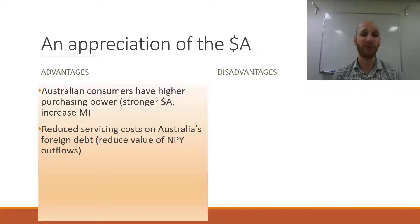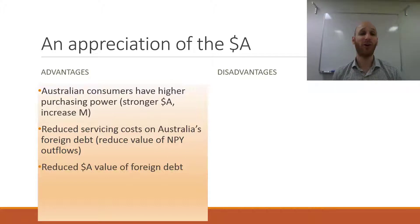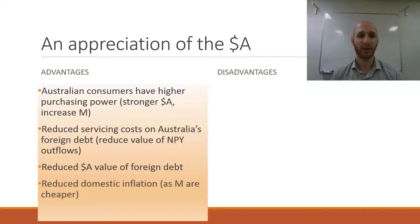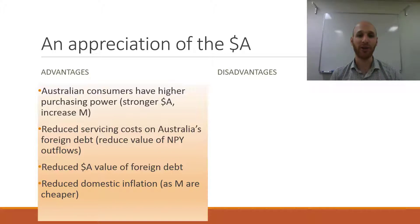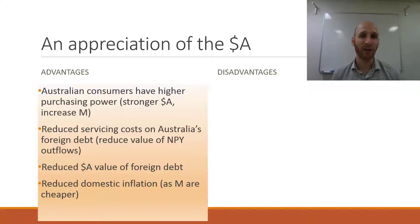That will reduce the value of net primary income (NPY) outflows. Also, the whole value of Australia's foreign debt will shrink in Australian dollar terms. Additionally, a higher Australian dollar will likely reduce domestic inflation because imports are cheaper. If imports are cheaper, the impact on the CPI will be lower, which will reduce inflationary pressures in the Australian economy.